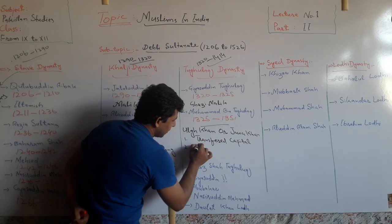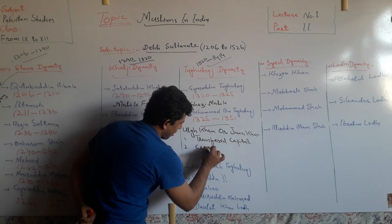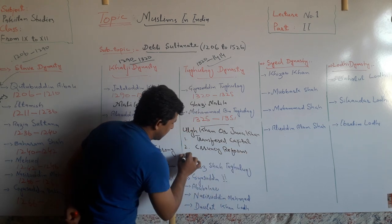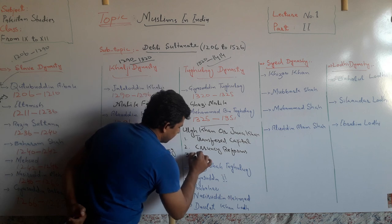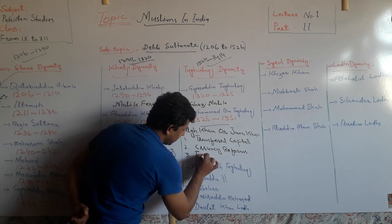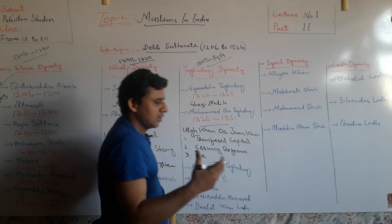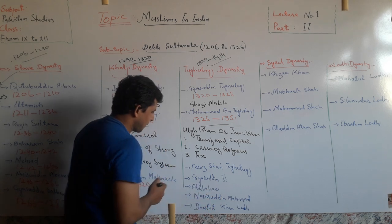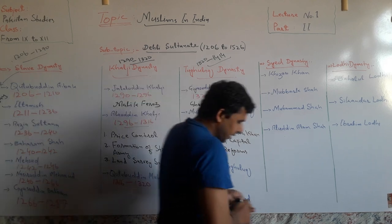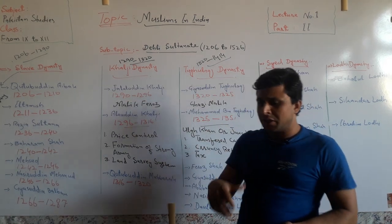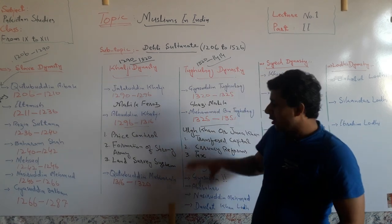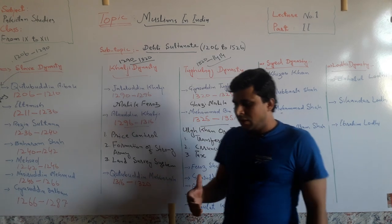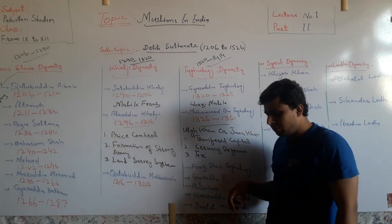Muhammad bin Tughlaq also introduced currency reforms, imposed taxes on the Doab — a fertile area — and attempted to conquer Tibet and China. All his projects failed for various reasons, which is why he is called the 'mixture of opposites.'